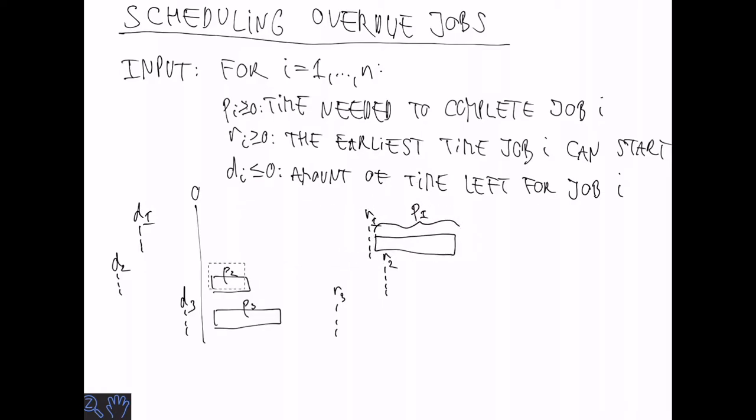So we need to find a time to schedule each job. And these should be non-overlapping. So for example we could do like this. And we would get a cost of c3 minus d3 where c3 is the completion time of job 3.